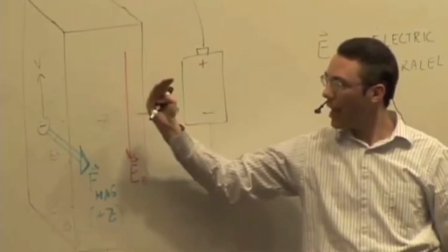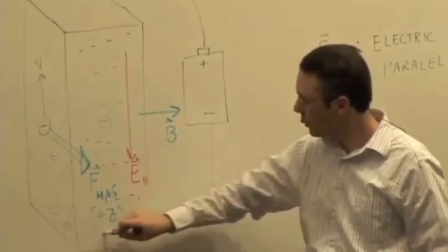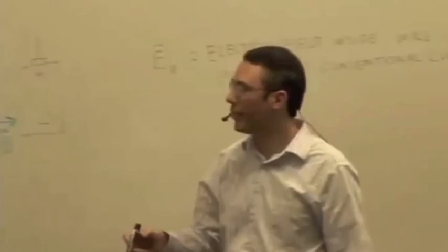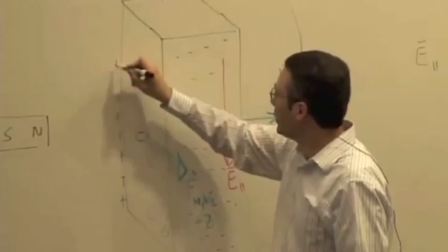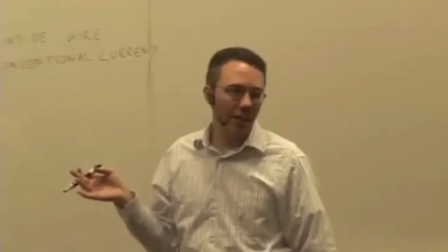Which side is going to build up a charge? The front side is going to build up a charge. The force is out towards us — if this negative charge feels a force out towards us, it's going to be deflected out. On the front side, we're going to build up negative charge.